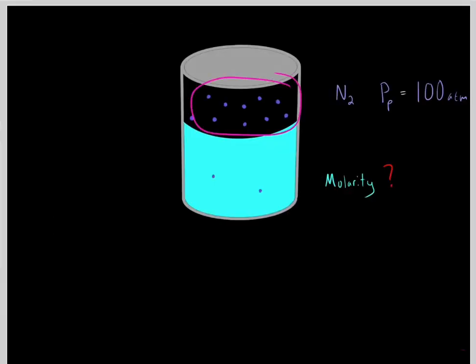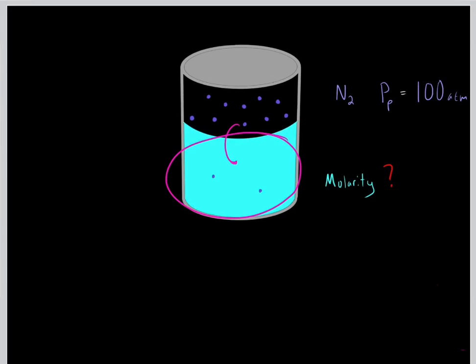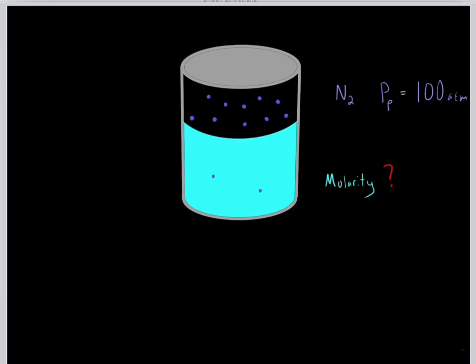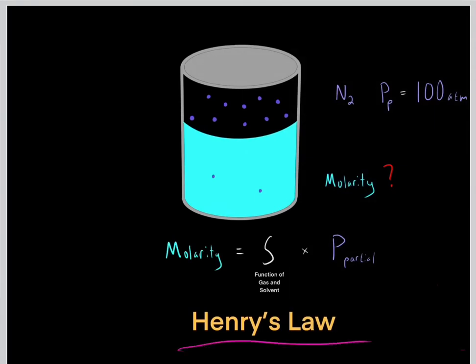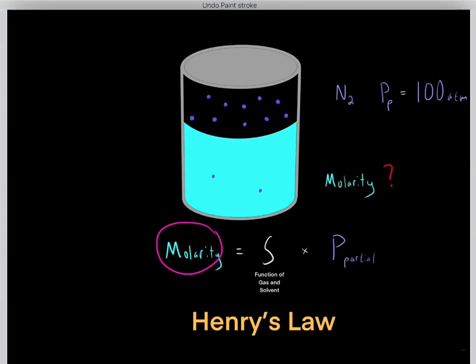Now let's say we have nitrogen gas with a partial pressure of 100 atmospheres. Some of this nitrogen is going to dissolve in a water solution. To determine the molarity of nitrogen in this water solution, we need to use Henry's Law. Henry's Law tells us the molarity of a gas in a solution equals the solubility constant multiplied by the partial pressure of the gas.